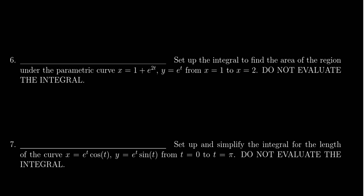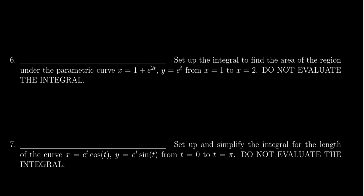In this video, we provide the solution to question number 6 for practice exam number 3 for Math 1220, in which case we have to set up the integral to find the area under the parametric curve x equals 1 plus e to the 2t and y equals e to the t from the region x equals 1 to x equals 2. We set up this integral, but we do not have to evaluate it.